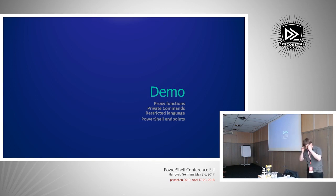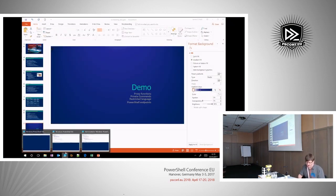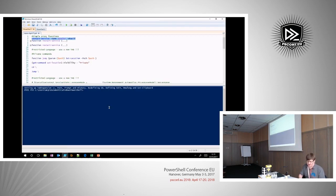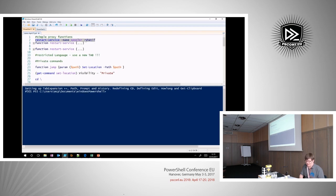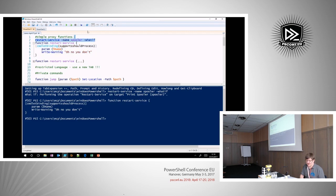Let me do a quick demonstration. Here's a proxy function. I'm not running with admin privileges here, but if I try and run a command to restart the spooler service, that command runs quite happily. I've got a proxy function also called Restart-Service — it supports ShouldProcess. Once I define that function and run the same command again, it comes back and says no, you don't. I've taken that function name out of use.